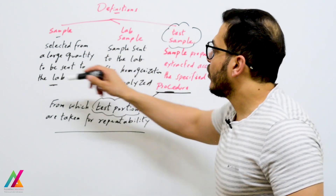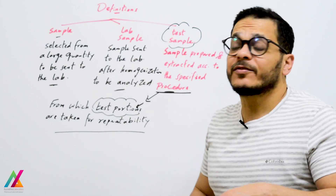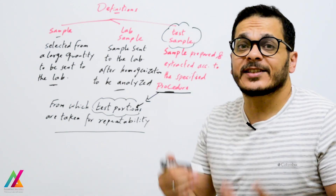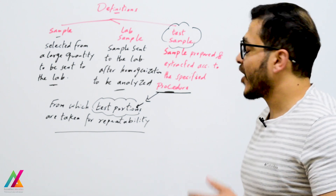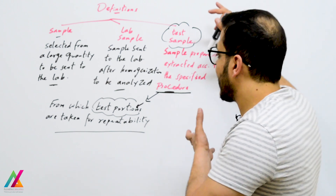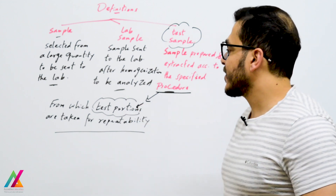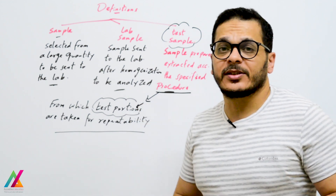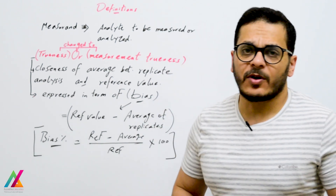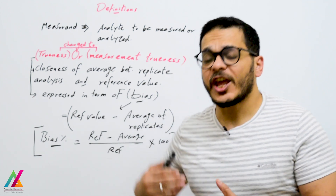Once sent to the lab, homogenization is performed on the sample — this is the lab sample. After preparation and extraction according to the specified procedure, you have the test sample. From the test sample, test portions are taken for replicate analysis for repeatability. The measurement is the target analyte to be measured, analyzed, or quantified.